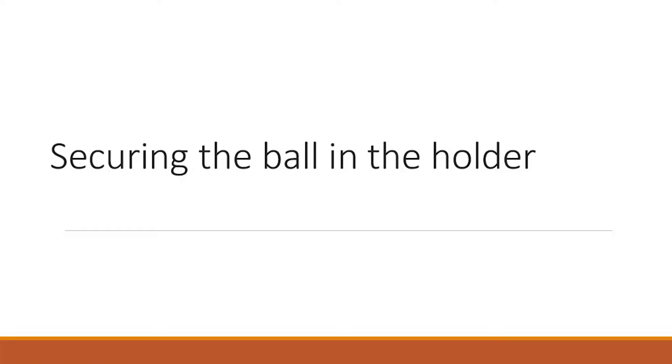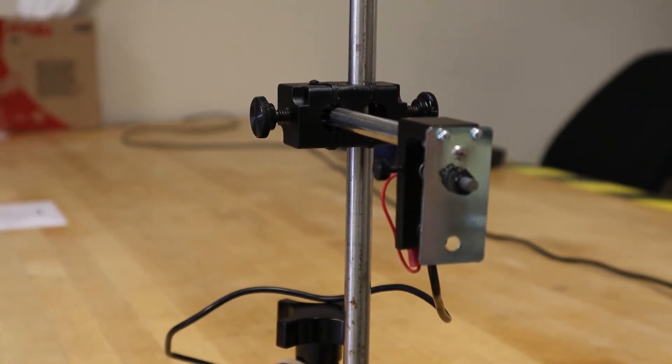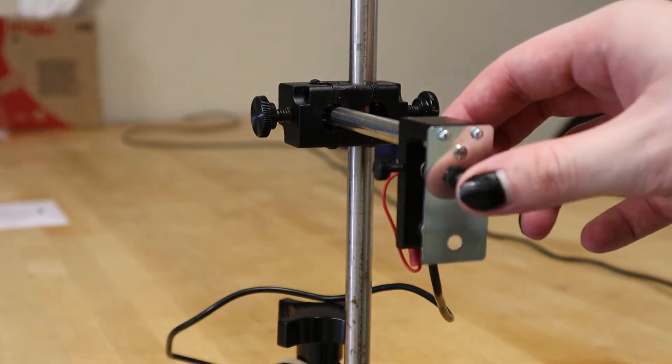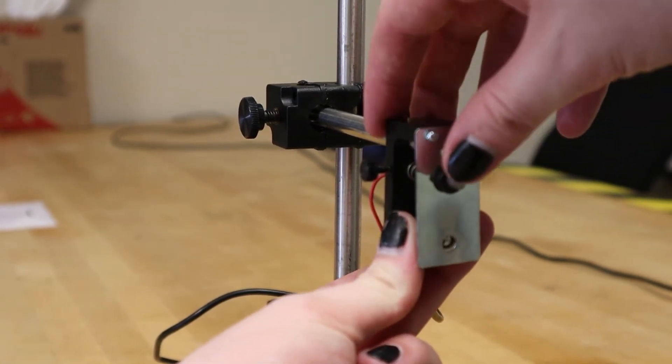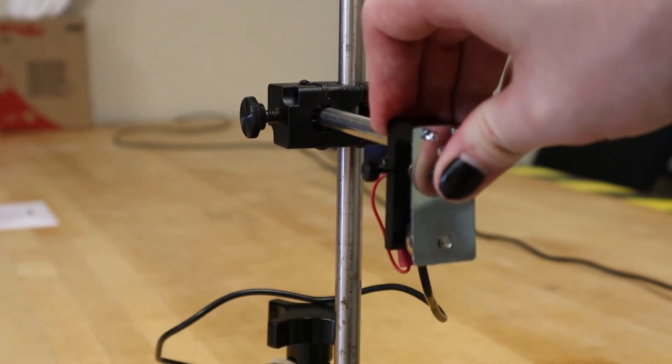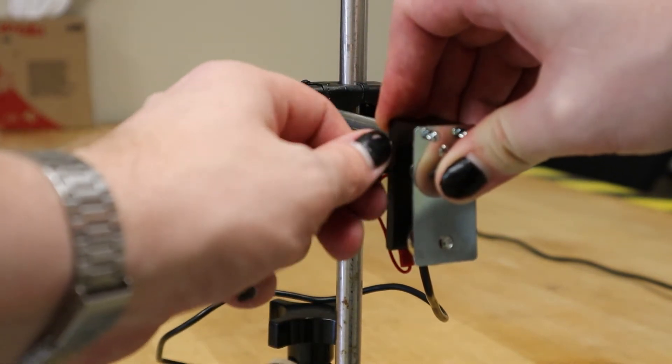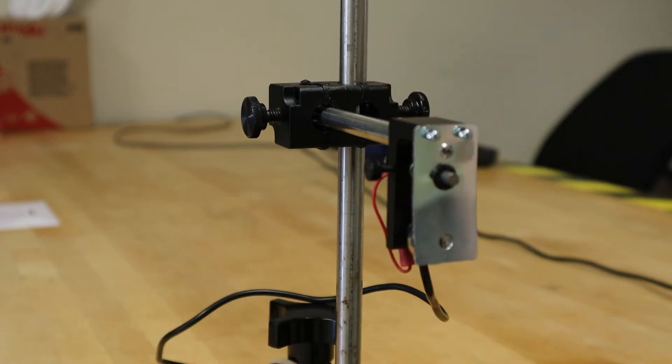We will now demonstrate how to secure the ball in the holder. First, loosen the thumb screw located on the left side of the holder. You'll notice a metal rod that moves back and forth. Place the ball on the metal contact, press down on the rod firmly, then tighten the thumb screw so the ball is held in place.